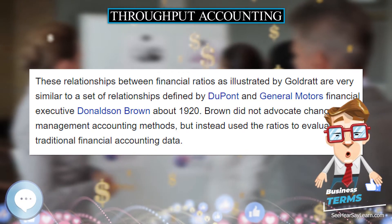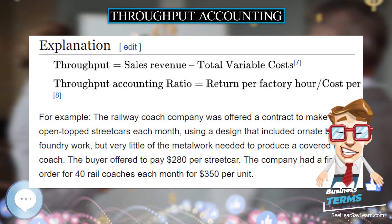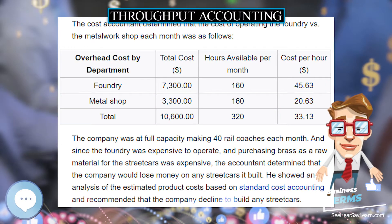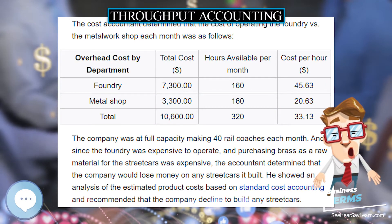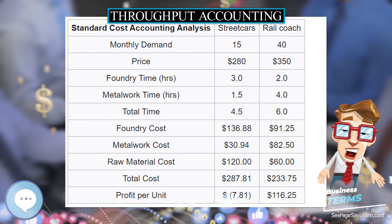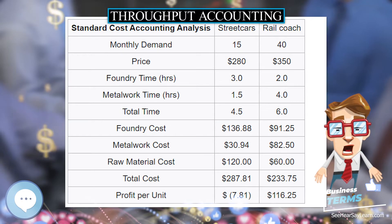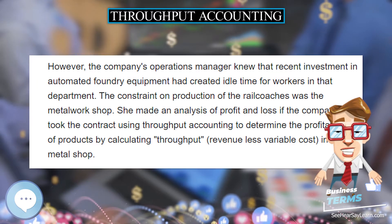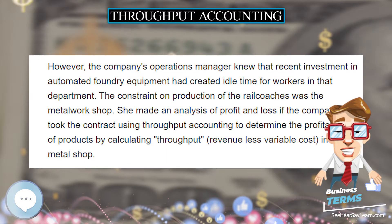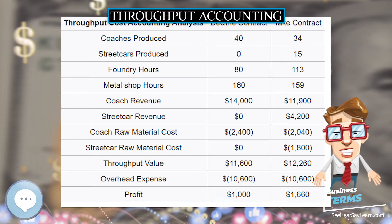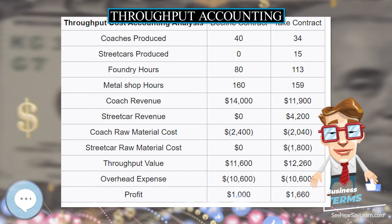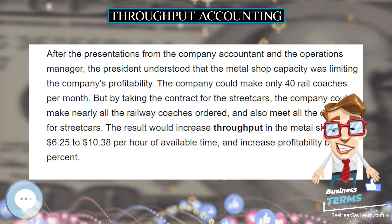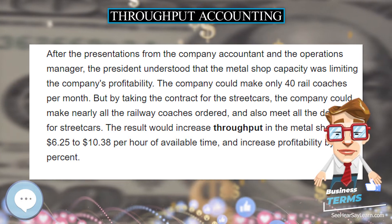These resources include machines, capital (own or borrowed), people, processes, technology, time, materials, markets, etc. Throughput accounting applies to not-for-profit organizations too, where they develop their goal that makes sense in their individual cases, and these goals are commonly measured in goal units. Throughput accounting also pays particular attention to the concept of bottleneck — referred to as constraint in the Theory of Constraints — in the manufacturing or servicing processes.